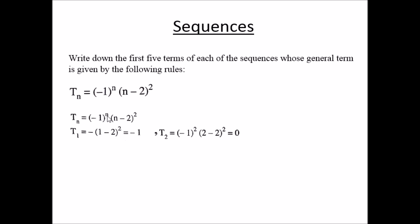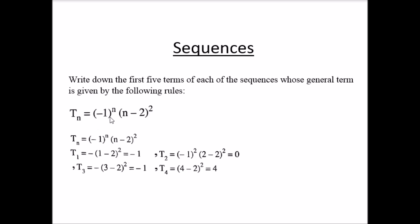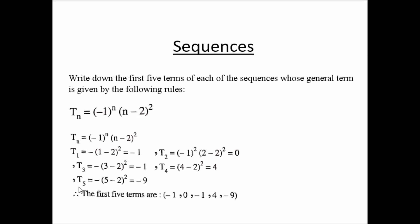At n=3: (-1)^3 × (3-2)² = -1 × 1² = -1, so T(3) = -1. At n=4: (-1)^4 × (4-2)² = 1 × 4 = 4, so T(4) = 4. At n=5: (-1)^5 × (5-2)² = -1 × 9 = -9, so T(5) = -9. The first five terms are: -1, 0, -1, 4, and -9.